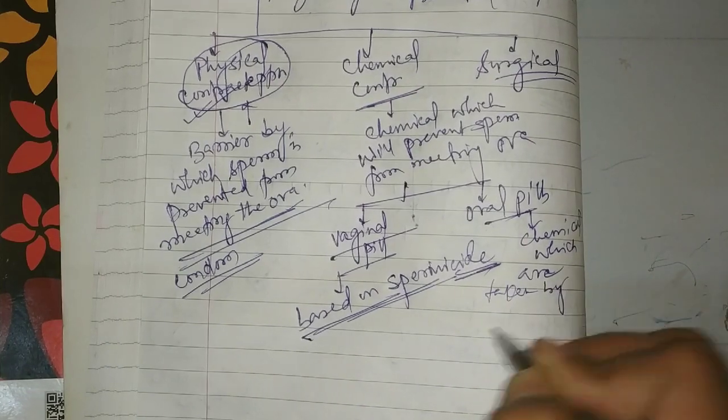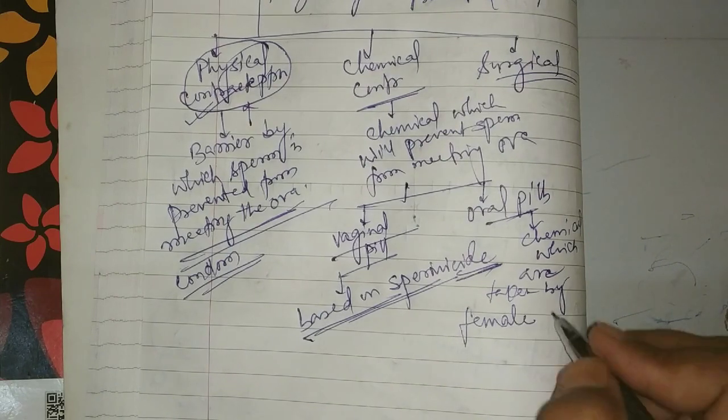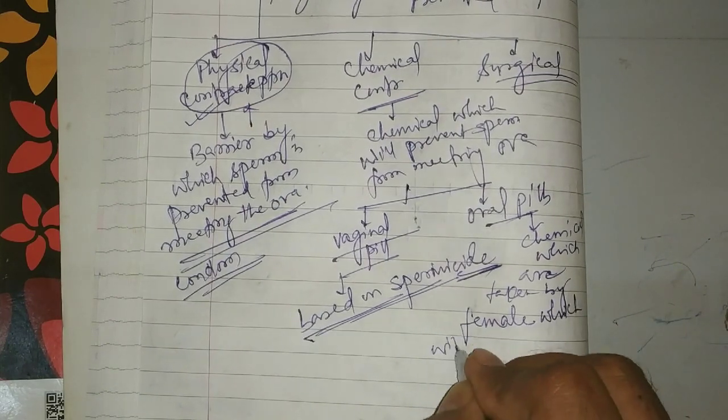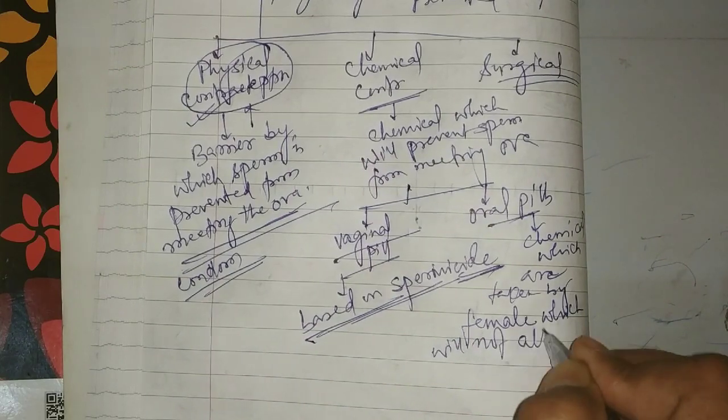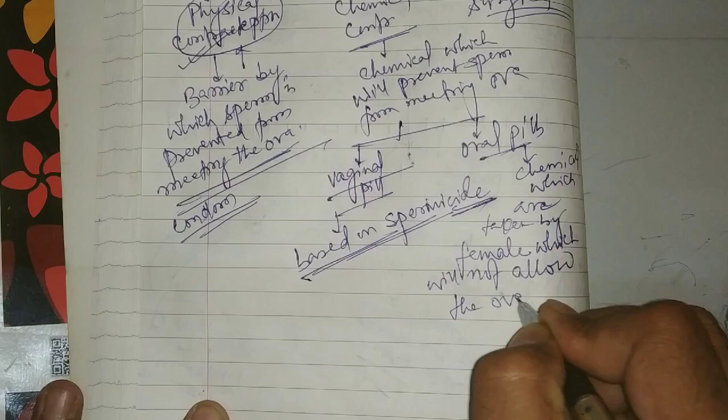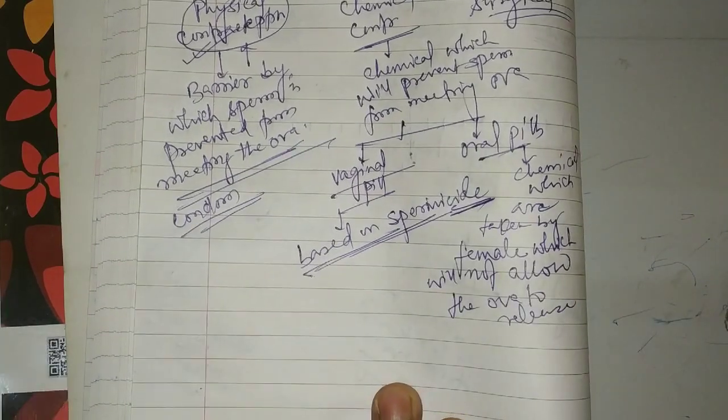Pills taken by females will not allow the ova to release. If ova is not released, then what will it be? Fertilization?